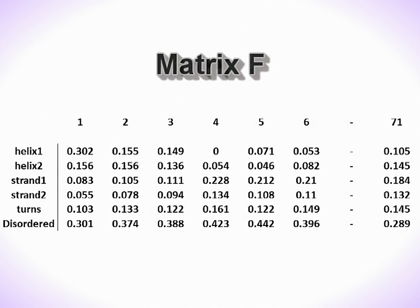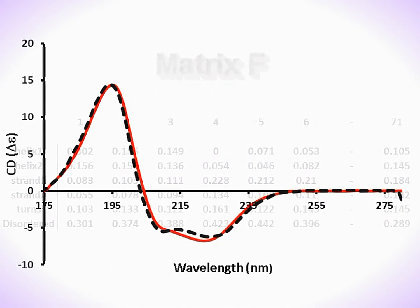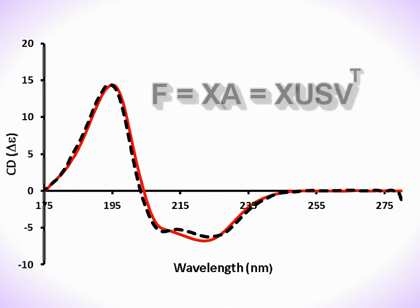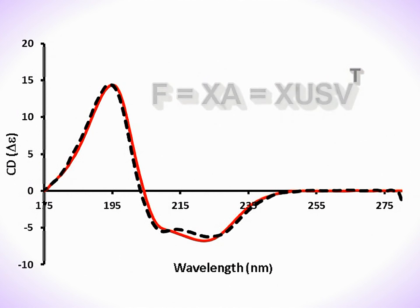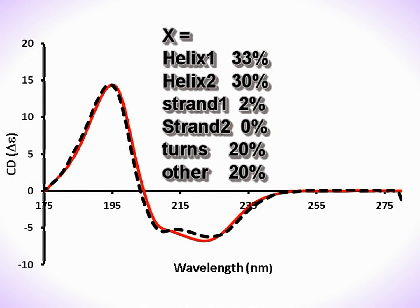There is also a matrix containing the secondary structures of the data set proteins, derived from X-ray diffraction. This forms part of the calculation so that the back-calculated spectrum arrives from the associated secondary structure prediction.